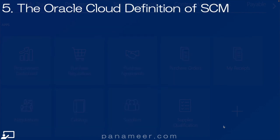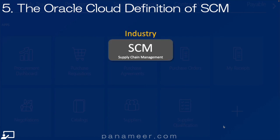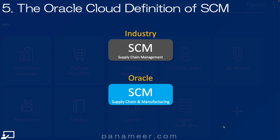And finally, slide five — Oracle Cloud's definition of SCM. The definition Oracle uses is different than the industry definition. The industry defines SCM as supply chain management, really about the distribution of goods between customers or suppliers and procurement. Oracle Cloud defines supply chain much more broadly — it defines it as supply chain and manufacturing. So this is getting from raw goods to finished product, out the door through a distribution network, and ultimately to your customers.